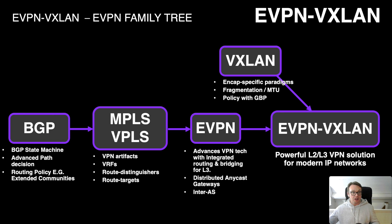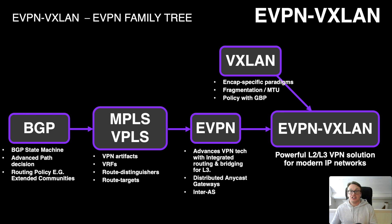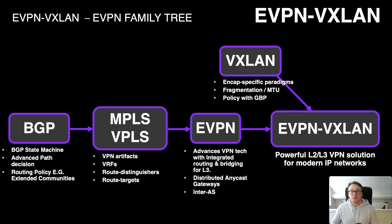Starting with BGP inheritance: you have the BGP state machine; EVPN updates are BGP updates with special extensions; you get the advanced path decision process, filtering, routing policy from BGP; and extended communities are used heavily with EVPN. From VPLS you get the VPN artifacts — Route Distinguishers (RDs) and Route Targets (RTs) — used a lot within EVPN configuration. On top of that, EVPN itself has been extended into layer 3 with Integrated Routing and Bridging (IRB), in both symmetrical and asymmetrical forms, plus features like distributed anycast gateways, ARP suppression, and inter-autonomous system setups.